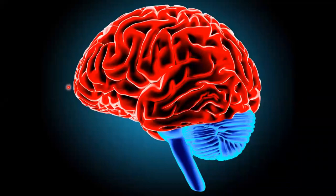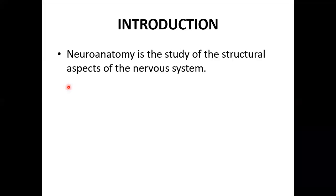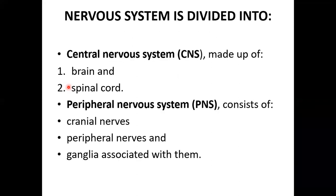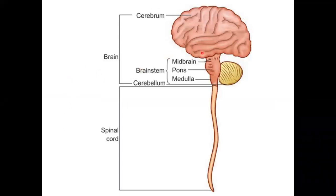Today's topic is the study of the nervous system. Neuroanatomy is the study of the structural aspects of the nervous system. The nervous system is divided into the central nervous system and the peripheral nervous system.